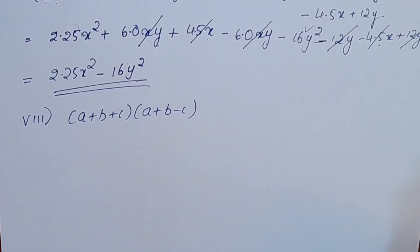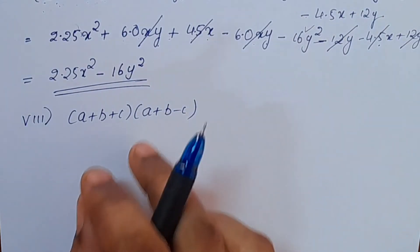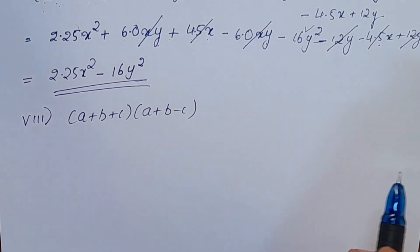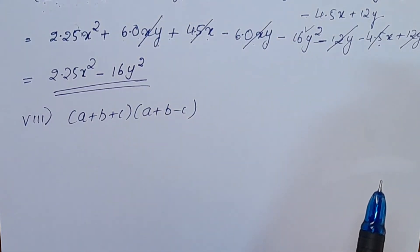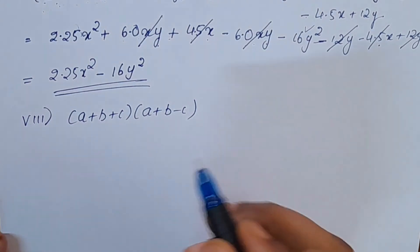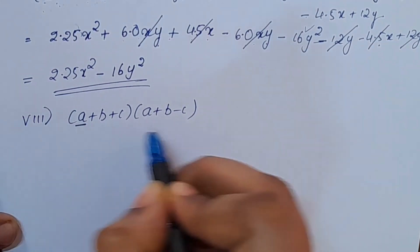Now we will do trinomials multiplication — a 3-term expression. Here is how to do this: first term multiply, then second term multiply, then third term multiply.